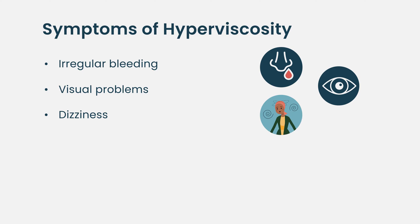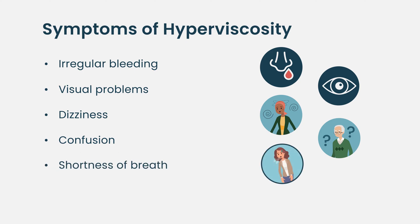Hyperviscosity can also cause neurologic symptoms. Patients may notice dizziness, confusion, and some may present with shortness of breath. In extreme cases it can even cause seizures and coma. Luckily, most patients present early, and depending on the type of disease, when we suspect it we do the right tests, which helps us make the diagnosis. That is the definition of hyperviscosity as it pertains to plasma cell disorders and Waldenström's macroglobulinemia.